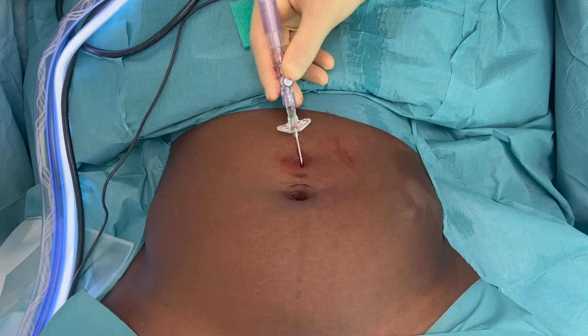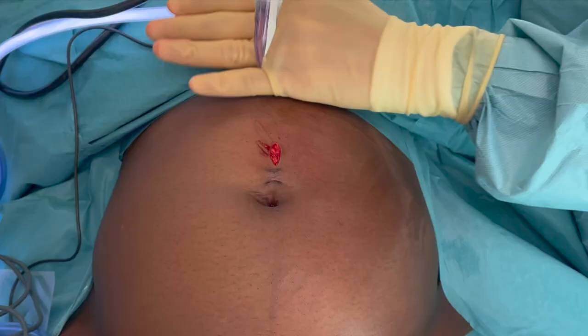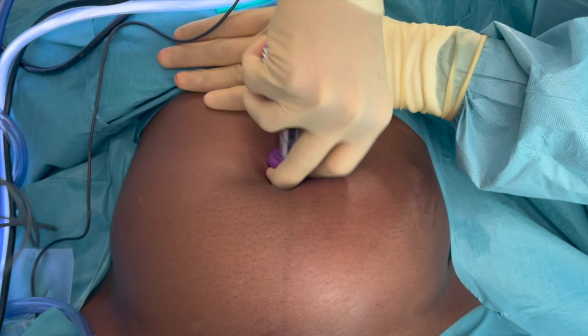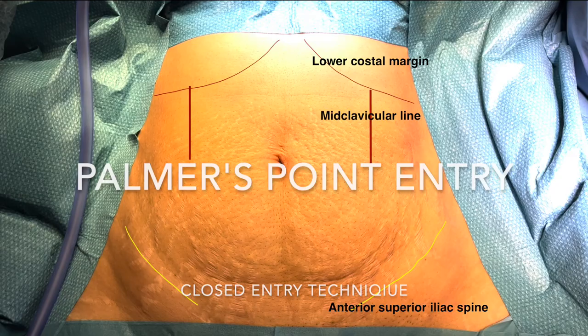After insufflating the abdomen with carbon dioxide gas, a 10 millimeter port is used and we are inside the abdomen. Next is the Palmer's point entry, which is also a closed entry technique.